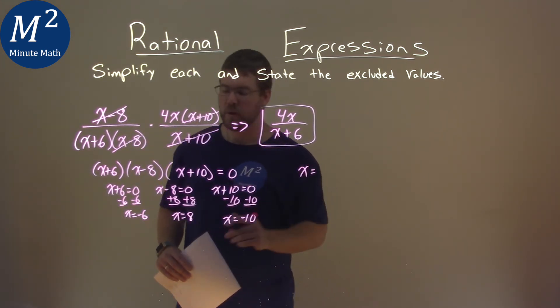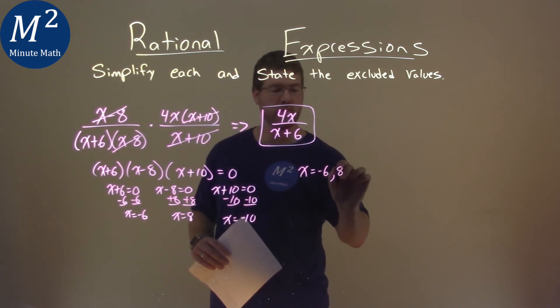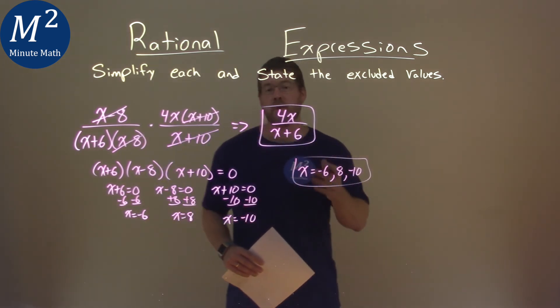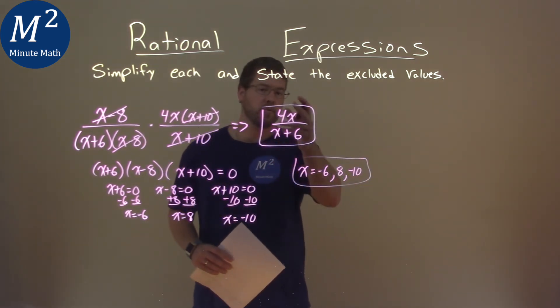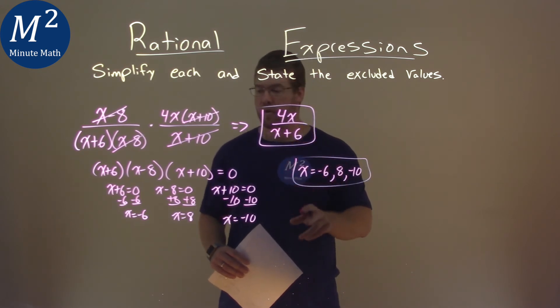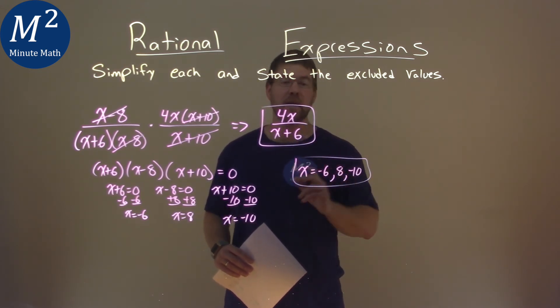And so our three excluded values are negative 6, positive 8, and negative 10. And so our final answer here is the simplified version of 4x over x plus 6, and our excluded values are negative 6, positive 8, and negative 10.